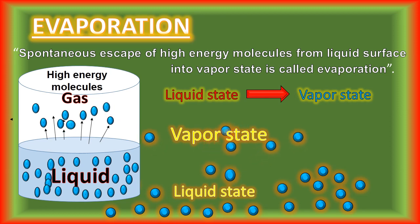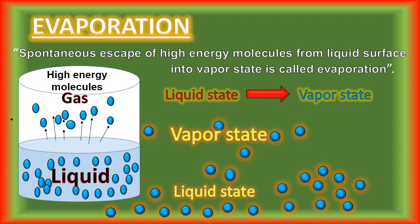Remember that evaporation is a surface phenomenon and it takes place at all temperatures below the boiling point. All the molecules in the liquid do not possess equal energies at any temperature, so they move with different velocities. When the high-energy molecules hit the molecules on the surface of the liquid, they give part of their energy to the surface molecules, which become able to overcome the force of attraction and thus leave the liquid surface. In this way, evaporation takes place.